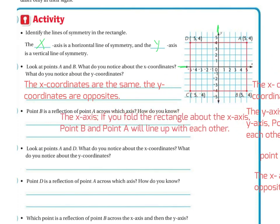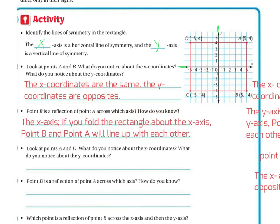Point B is a reflection of point A across the x-axis. How do you know? If you fold the rectangle about the x-axis, point B and point A will line up with each other. So if I fold it along the x-axis, right here, these two points are going to line up with each other.